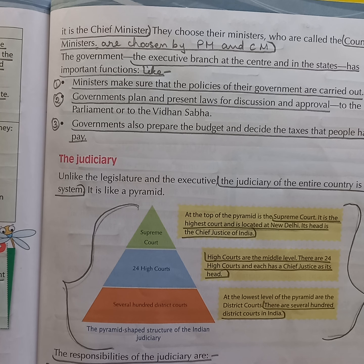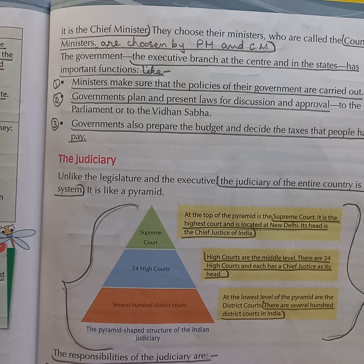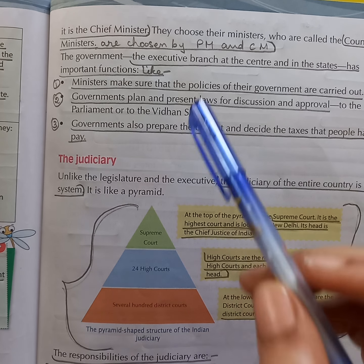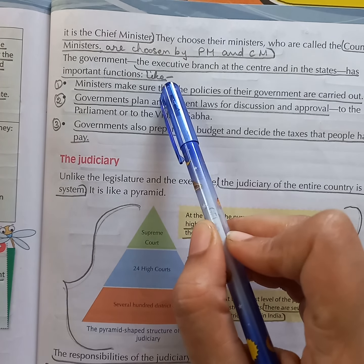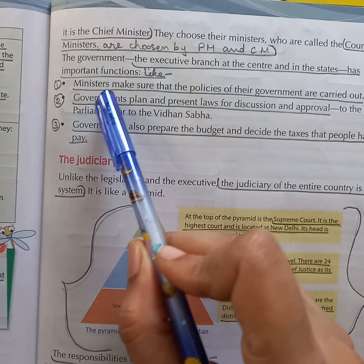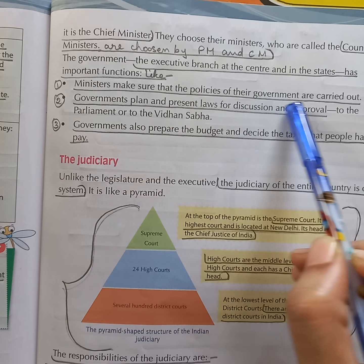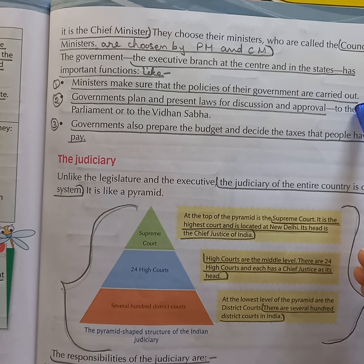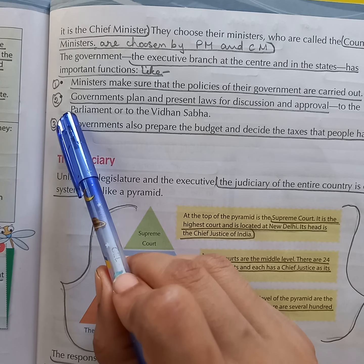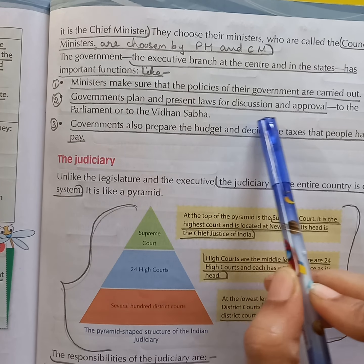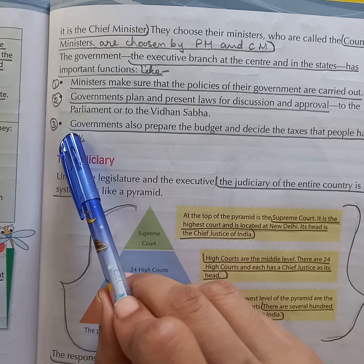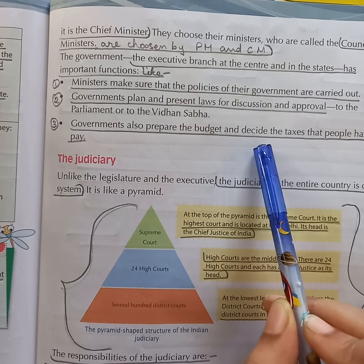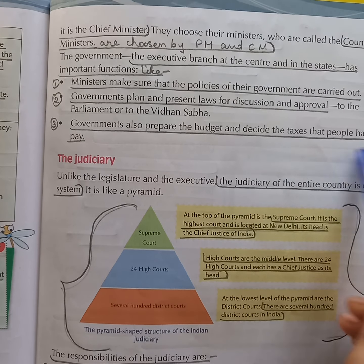Next question: what are the important functions of the Executive Branch at the centre and the state? Answer: the Executive Branch at the centre and in the states have important functions. First, the Ministers make sure that the policies of their Government are carried out. Second, the Government plans and presents laws for discussion and approval. Third, the Government also prepares the budget and decides the taxes that people have to pay.